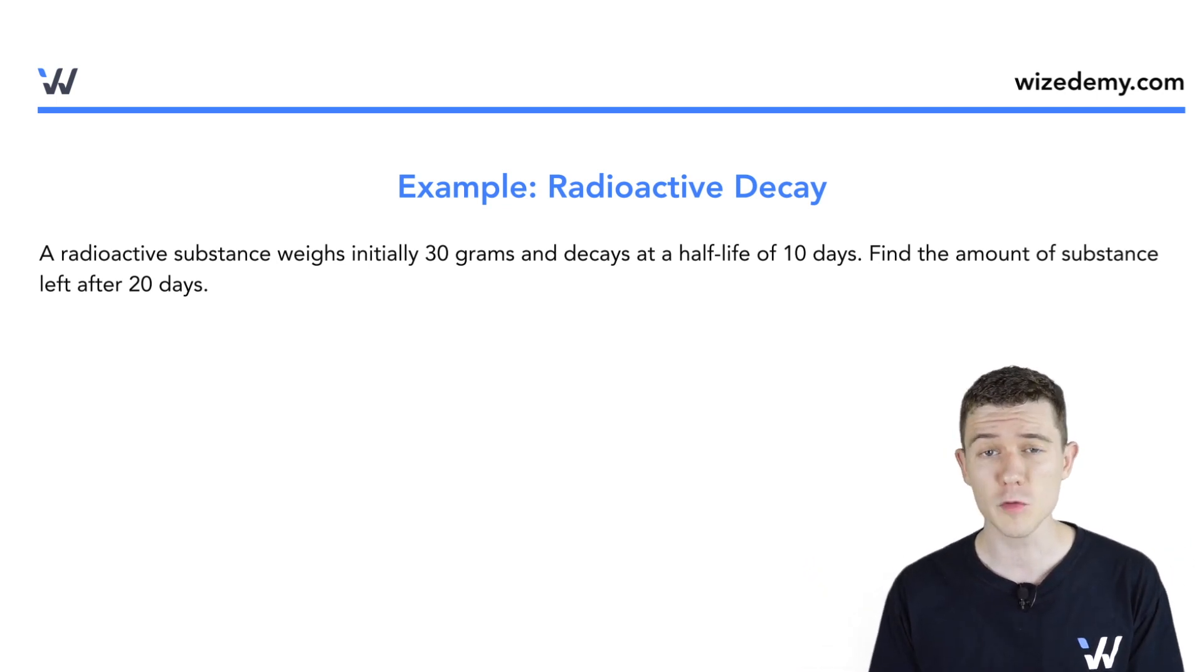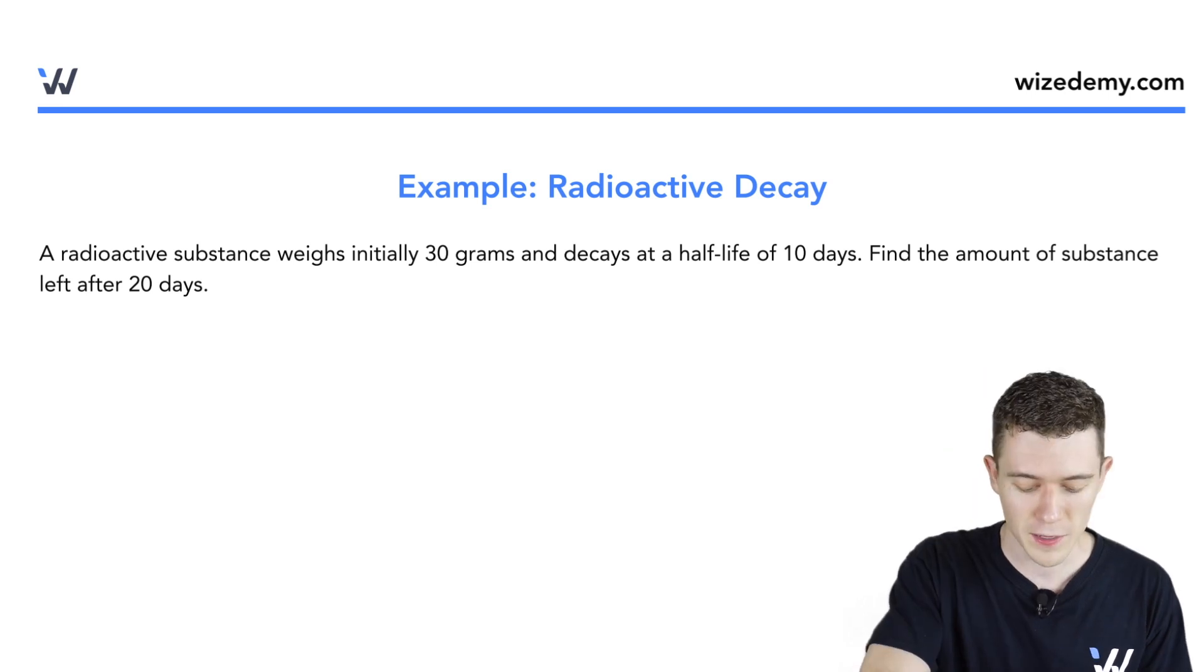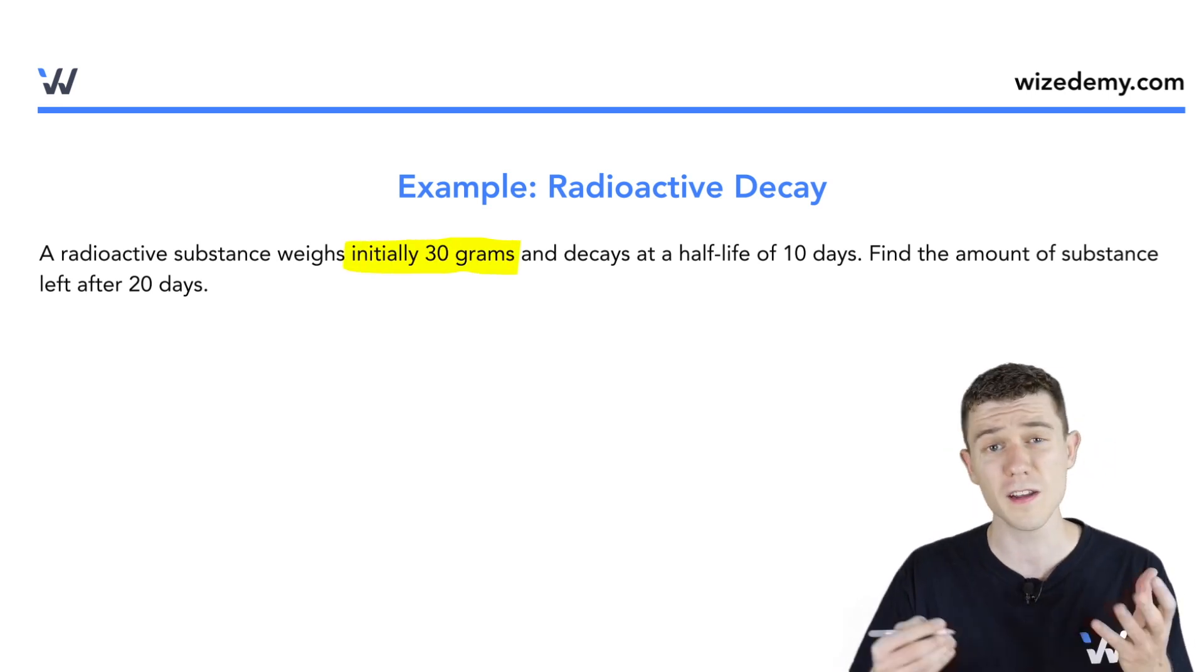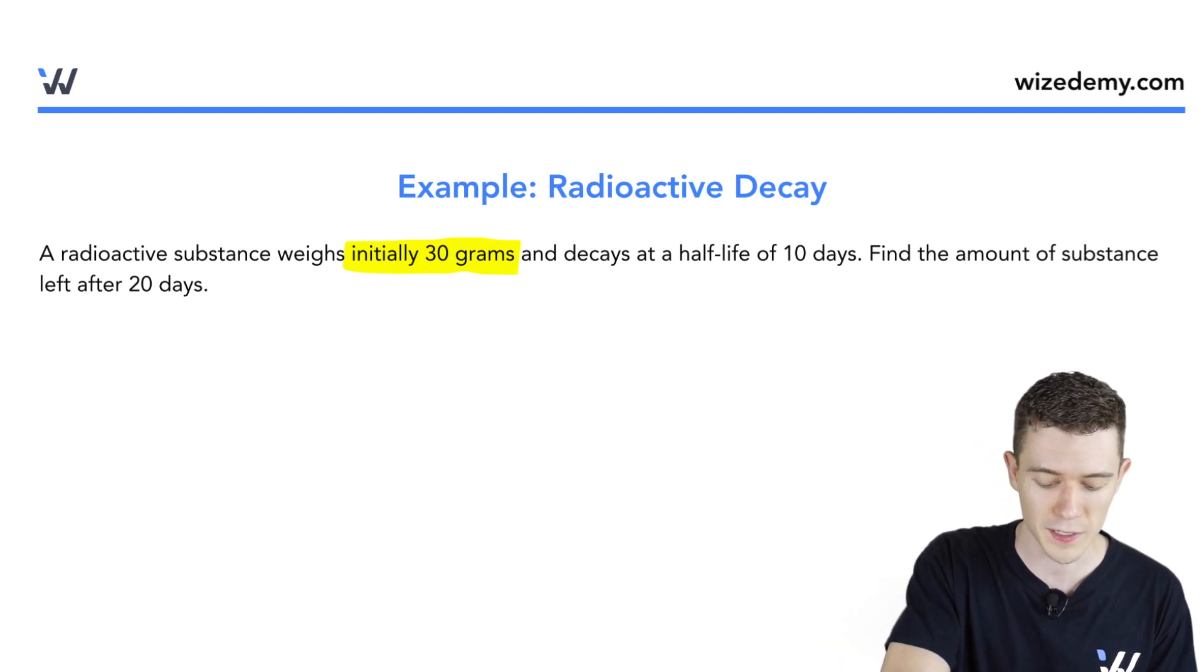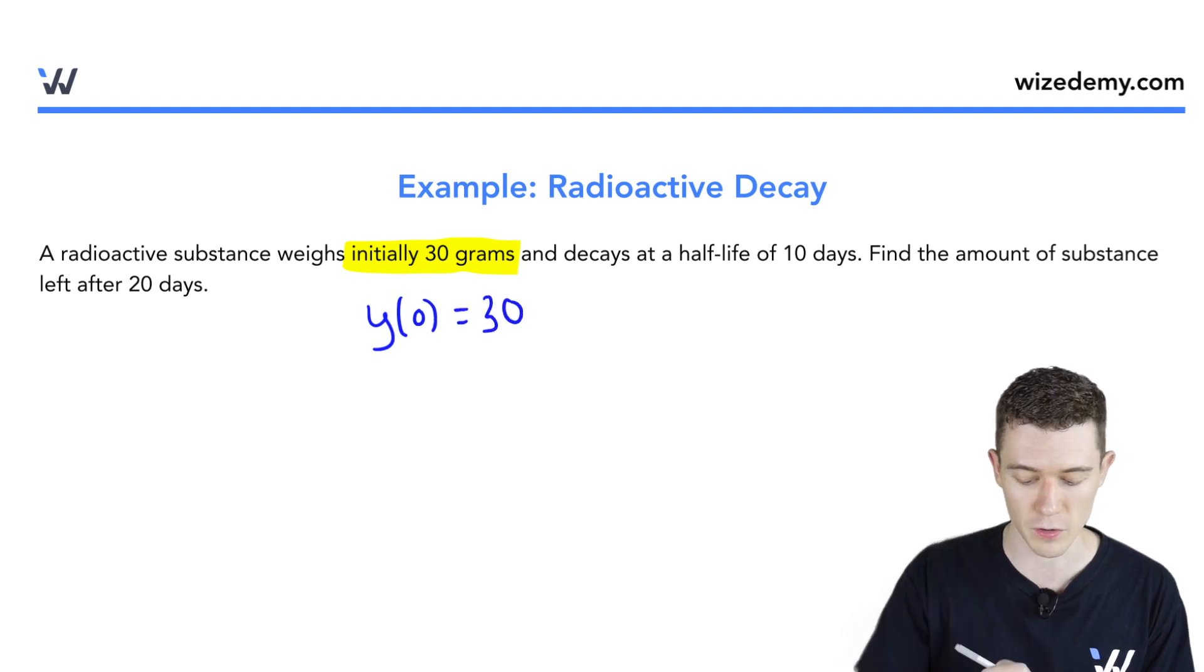We have some radioactive substance which is decaying with a certain half-life and we have a question about it. Here this substance initially weighs 30 grams. We'll use the letter y to denote the amount of the substance at time t. So what this means is that y(0) or y initial equals 30 grams.